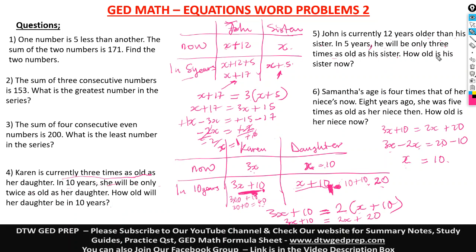The question asks how old is his sister now — so our answer is X equals 1; his sister is 1 year old. Let's check in the 5 years: sister is 1 plus 5 equals 6, and John is 1 plus 17 equals 18. Is John three times as old as his sister? 3 times 6 equals 18 — yes, we are correct. You can see this method of using a table is quite beneficial.